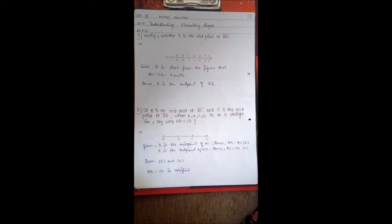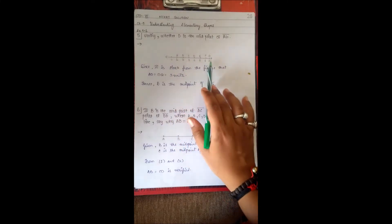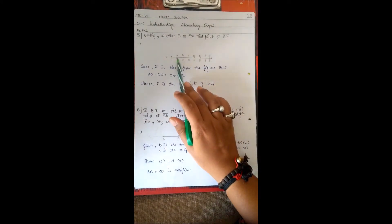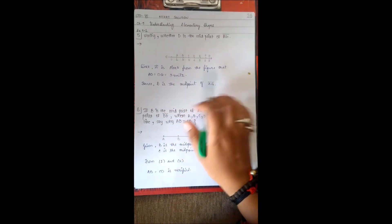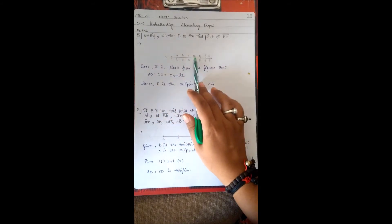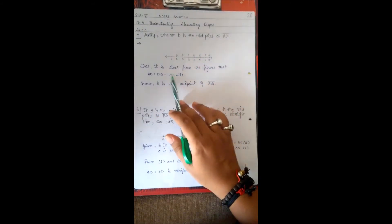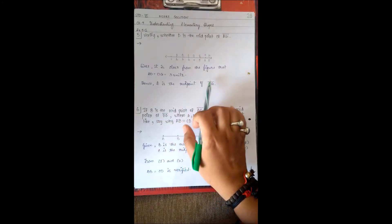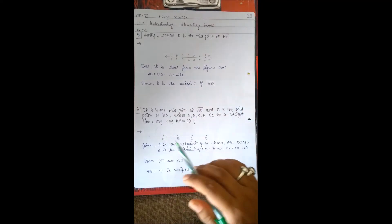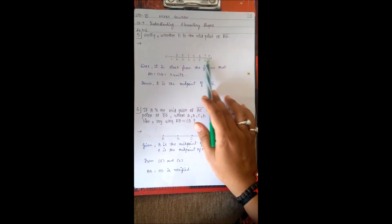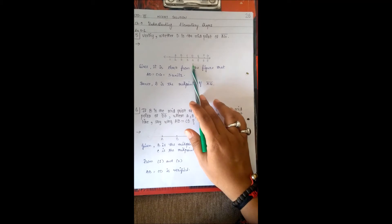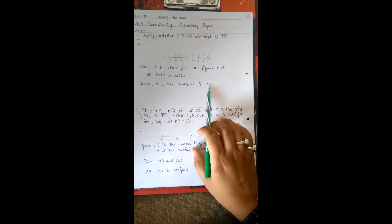Question 5: Verify whether D is the midpoint of line segment AG. From the figure, the line segment runs from 0 to 7 with points A, B, C, D, E, F, G marked. AD = DG = 3 units each. Hence D is the midpoint of line segment AG.